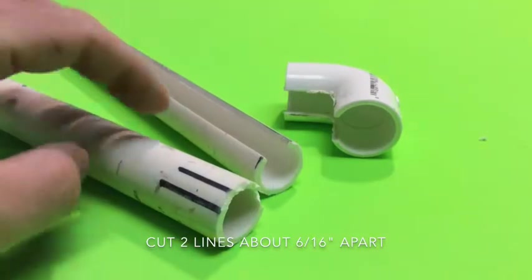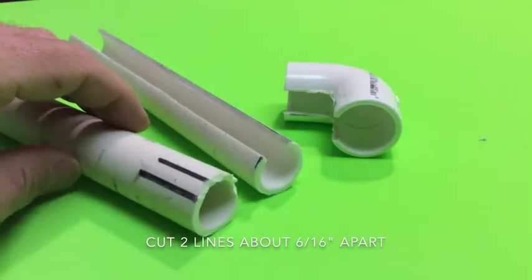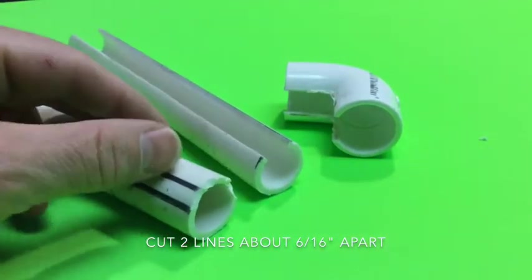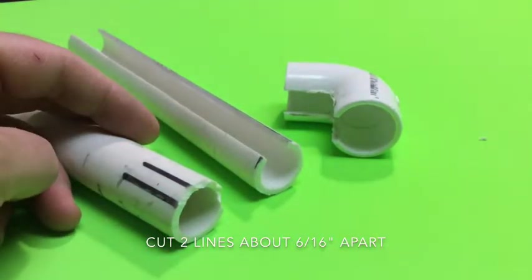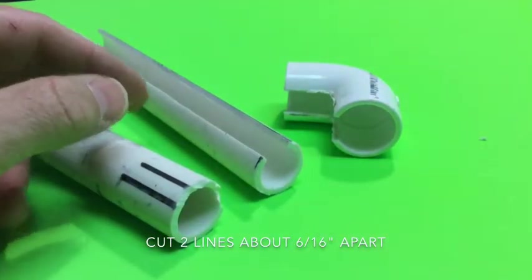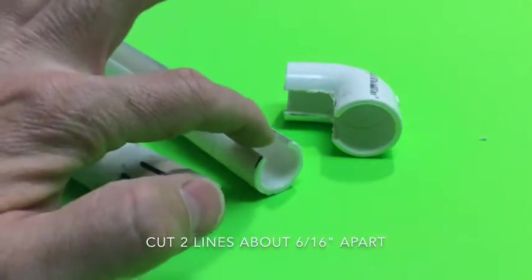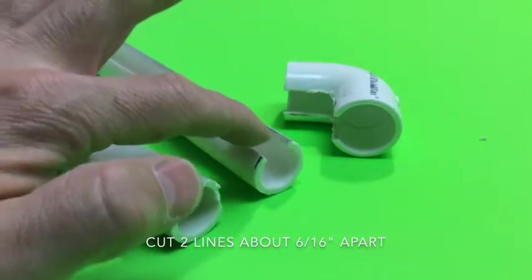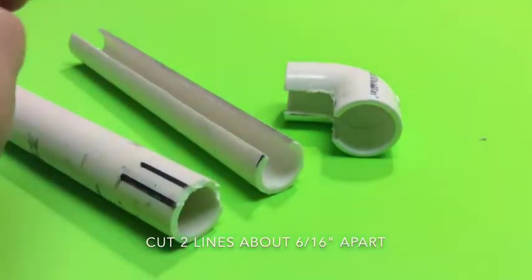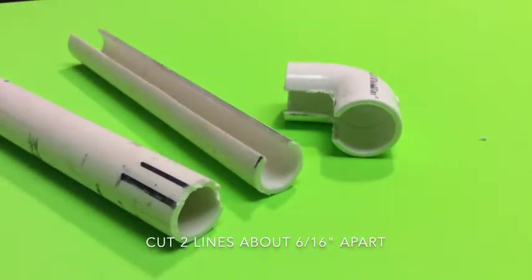What you're going to want to do with your PVC and all of your elbows is measure across about 6/16ths or a little bit wider, so when you cut the channel your iPad will fit in there. Now I know for other iPads you might have to make it a little wider.